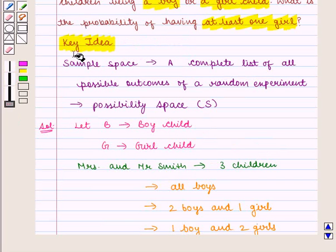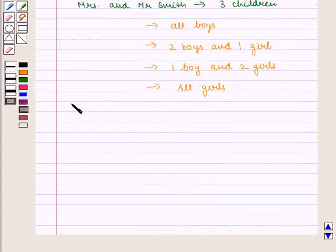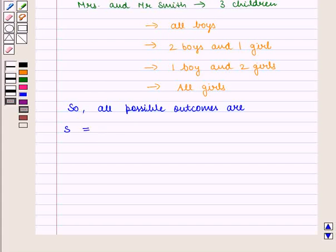From the key idea, we know that sample space is the complete list of all possible outcomes of a random experiment. So here, all possible outcomes are: